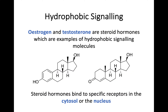Some examples: essentially any form of steroid hormones are hydrophobic signaling molecules. Estrogen and testosterone, for example, are ones that you do need to know. As the name suggests, they will pass through the plasma membrane and bind to a transcription factor, having an impact on transcription itself.